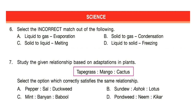Question 7: Study the given relationship based on adaptation in plants — tape grass is to mango is to cactus. Select the option which correctly satisfies the same relationship. Correct answer is option D. Pondweed is an aquatic plant, neem is a tree, and kicker is a plant with thorns, and so is cactus.